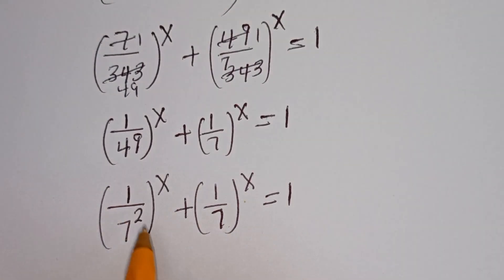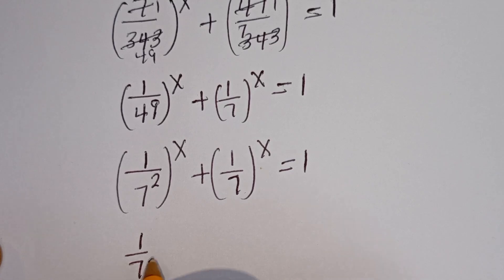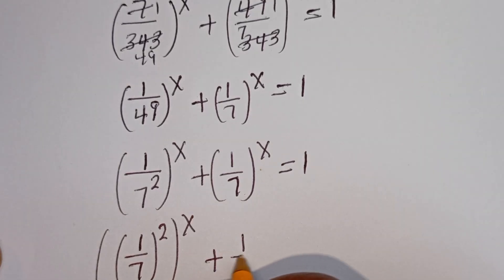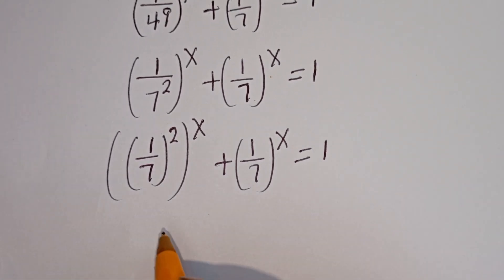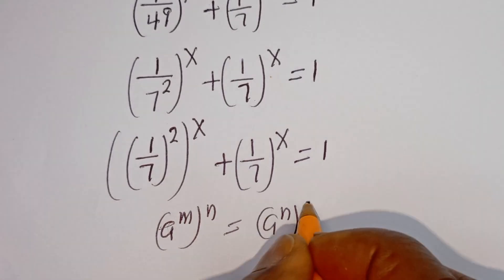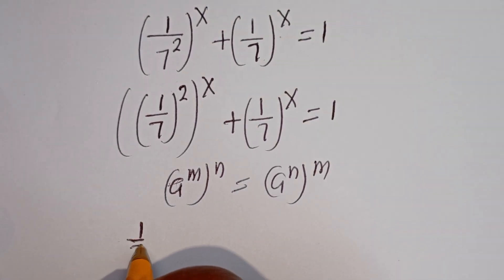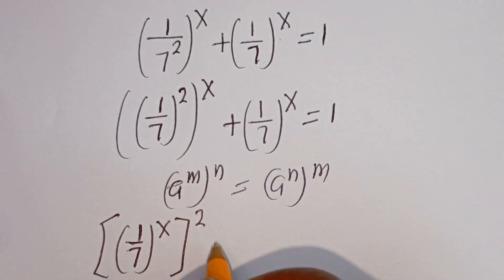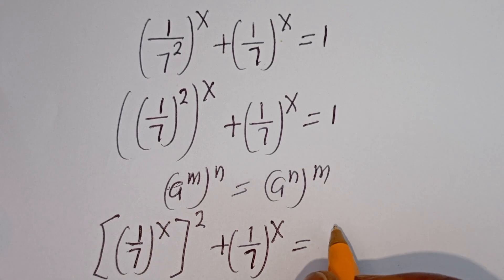Now here, 7 squared is 49. Using the rule that A to the power of M to the power of N equals A to the power of N to the power of M, this can be written as 1 over 7 to the power of S, all squared, plus 1 over 7 to the power of S is equal to 1.